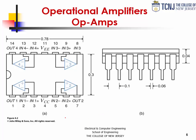If we look at the data sheet of a chip these days that, for example, would have four op-amps, we can see the symbol of the op-amp and the three main connections. We'll talk about this in detail in subsequent slides. We'll have a positive input, a negative input, and an output, and they can be connected in a chip like so.